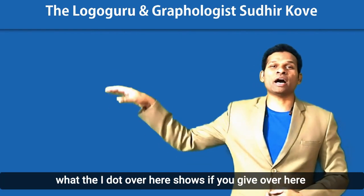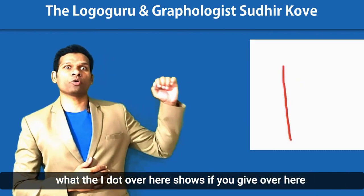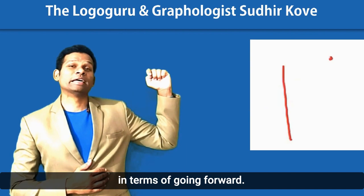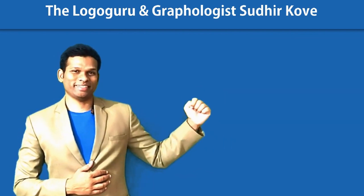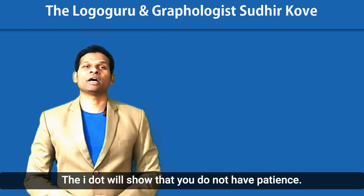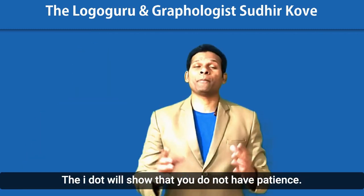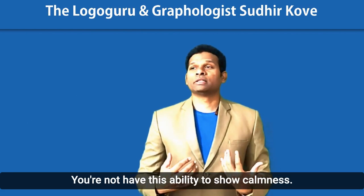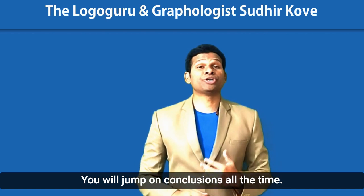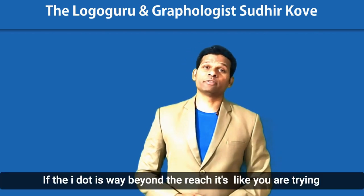If you give the i-dot forward, going ahead of the stem, what it shows is that you are impatient. The i-dot will show that you do not have patience, you do not have the ability to show calmness, and you will jump to conclusions all the time.